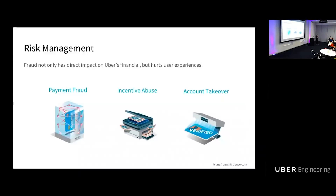For risk management, we know that fraud not only affects Uber's financials but also hurts user experience. There are different types of fraud. For payment fraud, the fraudster will use a stolen credit card to pay for Uber trips so they can cash out the credit card. When the real owner finds out, they call the bank to dispute the transaction, and Uber has to take all the loss.